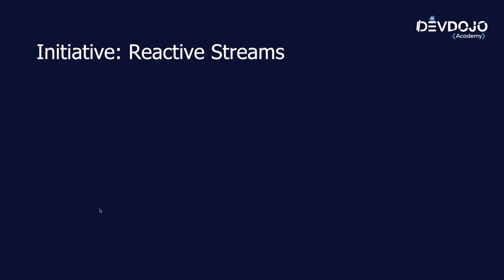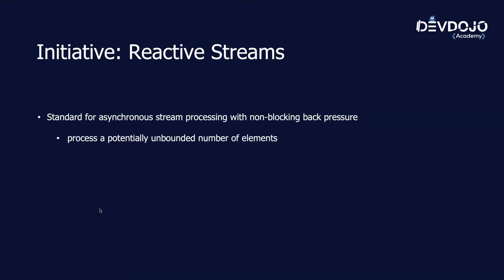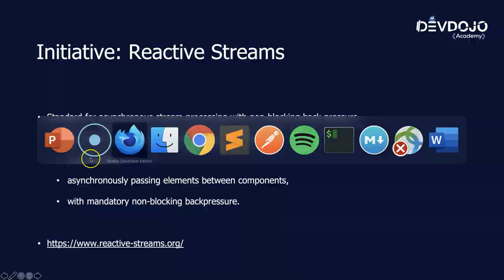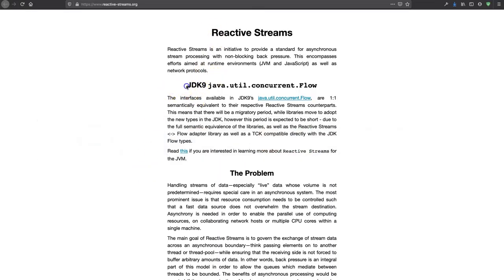We have this initiative called Reactive Streams. Some people got together and tried to create a standard for asynchronous stream processing with non-blocking back pressure — everything that reactive programming is about. It processes a potentially unbounded number of elements in a sequence asynchronously, passing elements between components with mandatory non-blocking back pressure. You can check reactivestreams.org for all the information. With the Java 9 release, we have the concurrent Flow API. Don't get confused between Java streams and reactive streams — they are totally unrelated.